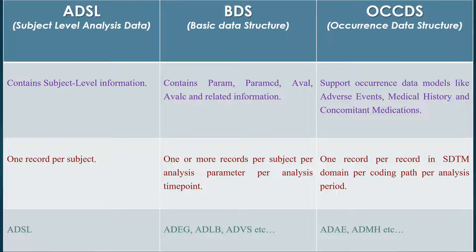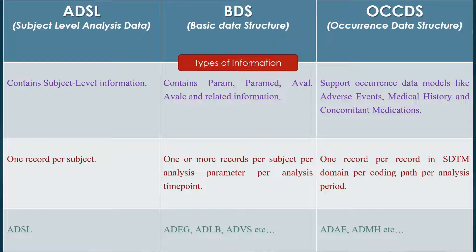Let's see the types of information these datasets contain. ADSL contains subject-level information. The BDS data structure contains PARAM, PARAMCD, AVAL, AVALC and related information. The Occurrence Data Structure can support occurrence data models like adverse events, medical history, and concomitant medications.